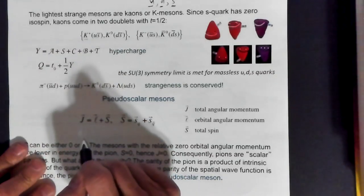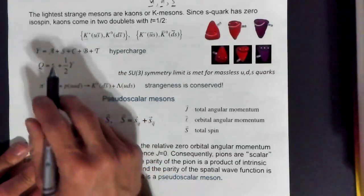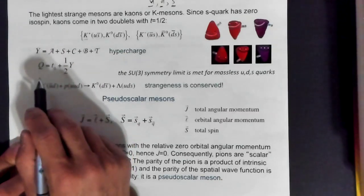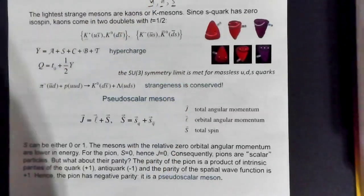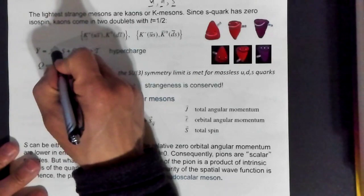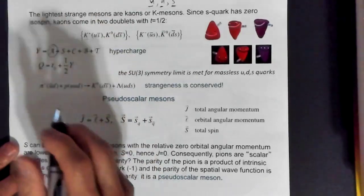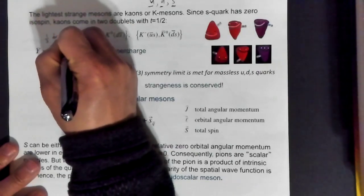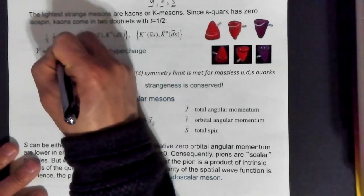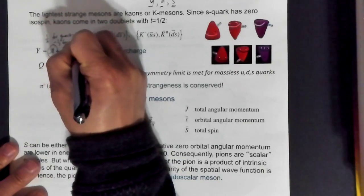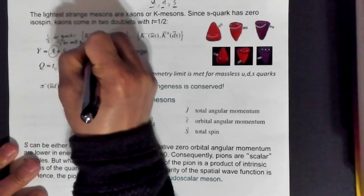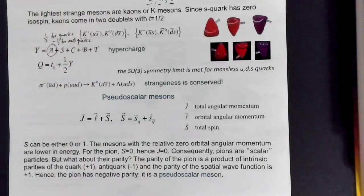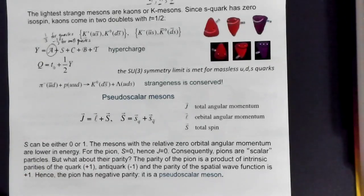We can also talk about something called hypercharge. Hypercharge is a catch-all term where you add together the baryon number — remember, that's just +1/3 for quarks and -1/3 for antiquarks.